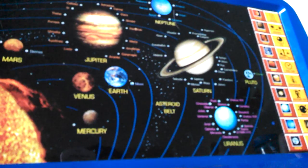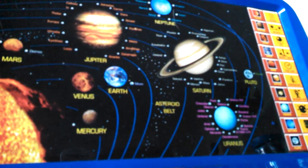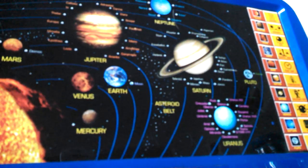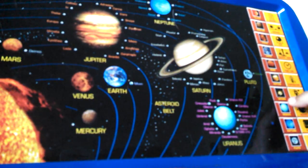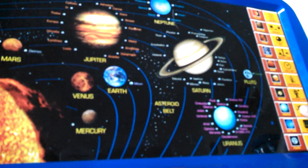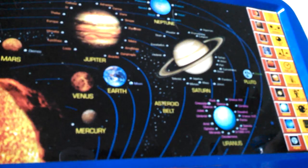The Great Dark Spot on Neptune is an Earth-sized hurricane. The 1,500 miles per hour winds of Neptune are the strongest in the solar system. Neptune has 13 moons. The largest moon is Triton.